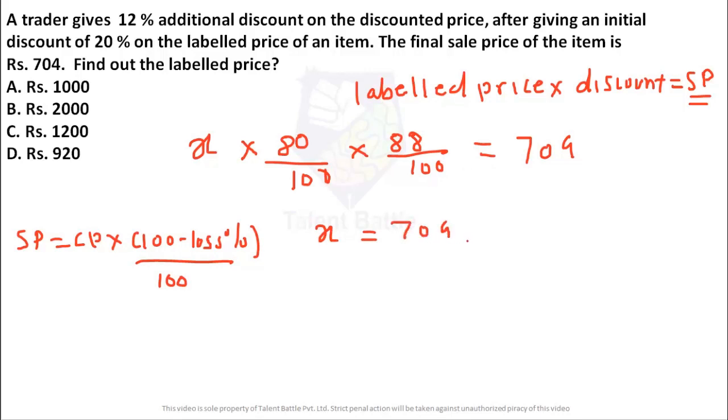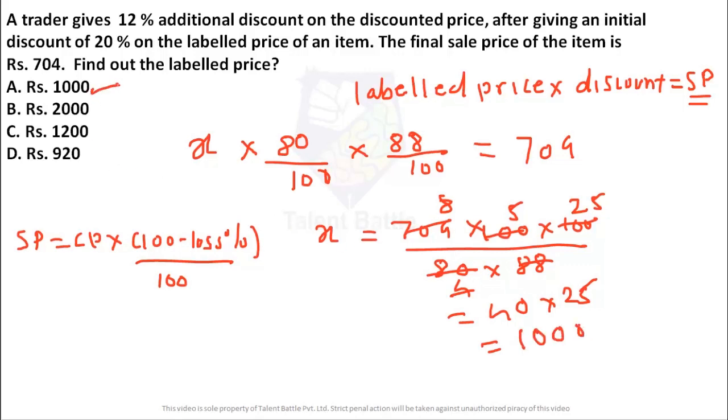In this case the selling price they have given as 704 rupees. So just calculate x, it will be 704 into 100 into 100 divided by 80 into 88. So if you calculate, 88 into 8 into 8 is 704 if you calculate this. 8 into 5 is 40, 40 into 25 is nothing but 25 into 400 means 1000. So the label price was initially 1000 rupees. Then he gave discount of 20 percentage and then again a discount of 12 percentage on that, and then he sold that particular item at 704 rupees. So whenever you're going to face such questions take value of label price as x. Whatever discount they have given just 100 minus that discount divided by 100. Now in this case two discounts were there is equal to selling price. So the answer in this case is rupees 1000.